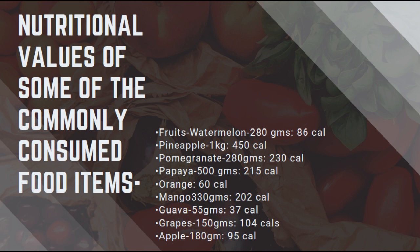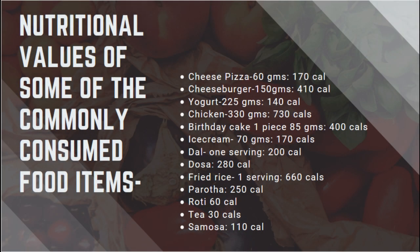Let us take fruits first. 280 grams of watermelon gives you 86 calories. 1 kilogram of pineapple gives you 450 calories. A pomegranate gives you 230 calories. 500 grams of papaya gives you 215 calories. An orange gives you 60 calories. One mango of 330 grams gives you 202 calories. 55 grams of guava gives you 37 calories. 150 grams of grapes gives you 104 calories. 180 grams of apples gives you 95 calories.